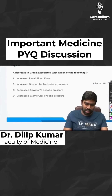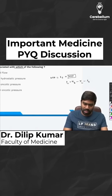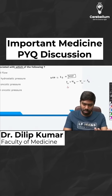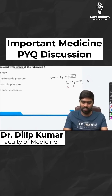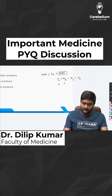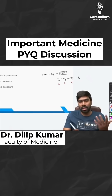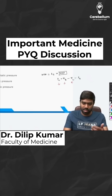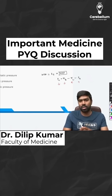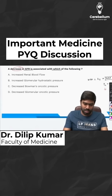They are asking about conditions associated with decrease in GFR. Technically, if the hydrostatic pressure of the capillaries or the oncotic pressure of the Bowman's capsule decreases, the filtration will decrease. Alternatively, if the oncotic pressure in the glomerular capillary increases, or if the hydrostatic pressure in the Bowman's capsule increases, that is going to be associated with decrease in GFR as well.